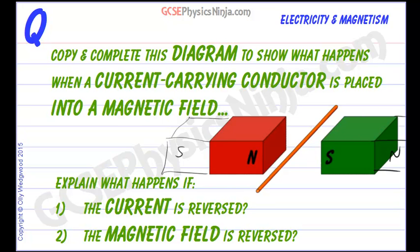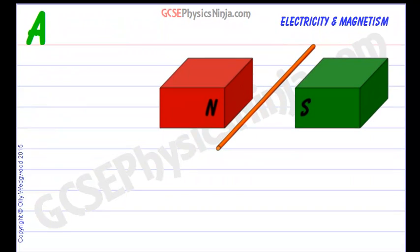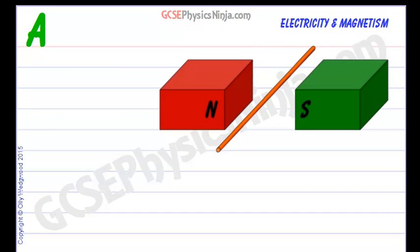But let's take a look and see what happens first of all completing this diagram to show what happens to this current carrying conductor. So first of all we have to make a current flow in the wire. The best way of doing that is to connect a circuit to a battery or electrical power supply.